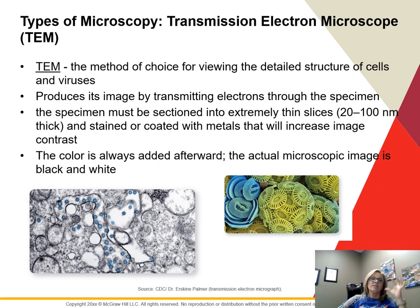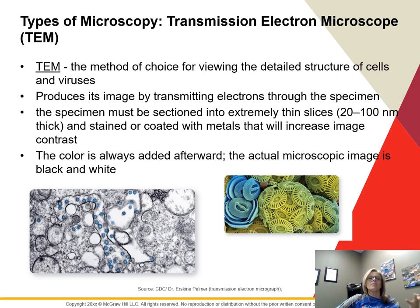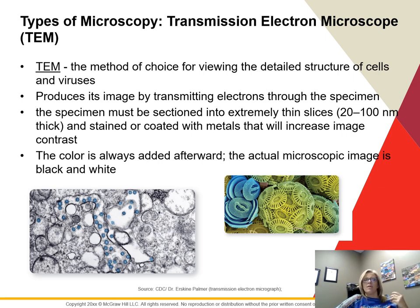The SEM provides some of the most dramatic and realistic images in existence, creating a very detailed 3D view of objects — from the plaque on your teeth to the heads of tapeworms. It bombards the surface of a metal-coated specimen with electrons, scanning back and forth. The electrons are deflected from the surface and the electron pattern is displayed as an image on screen. The image comes out in black and white and is colorized afterward — they usually do them very brightly.